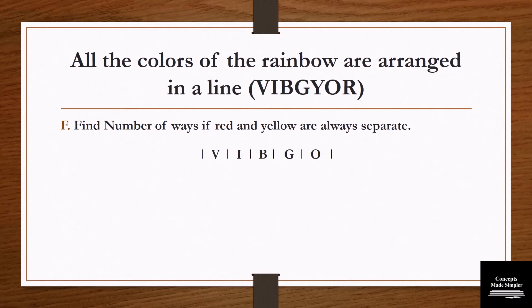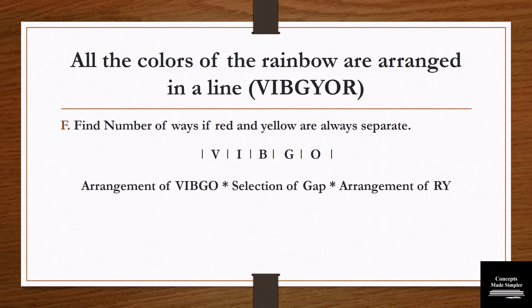Count the number of gaps — the total number of gaps is 6. First, arrange V, I, B, G, O. Then multiply by the selection of a gap, then multiply by the arrangement of R and Y. Final solution: arrangement of V, I, B, G, O takes 5 factorial; selection of gap takes 6C2; arrangement of R and Y takes 2 factorial. The final result is the product of all three.